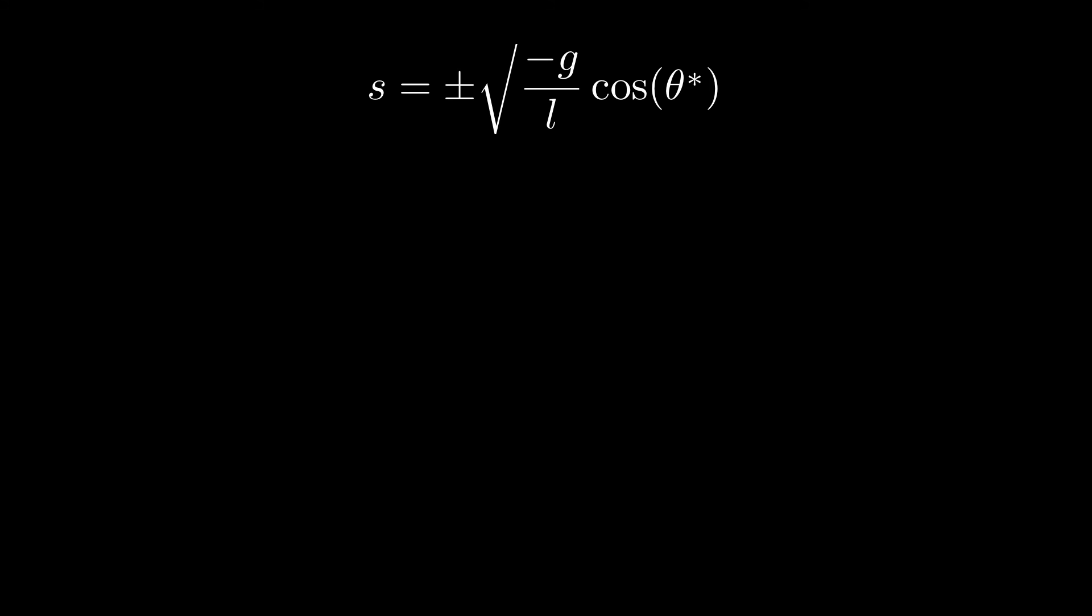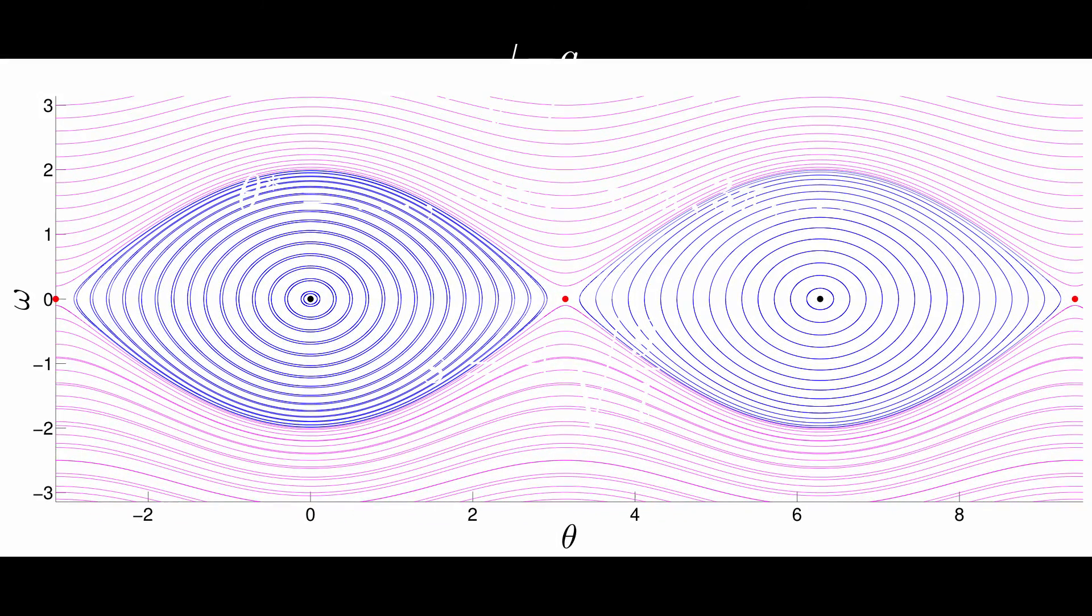If we instead choose theta to be an odd multiple of pi, for example pi, we see that cosine of pi is equal to minus one, and then we get the possible eigenvalues are plus or minus the square root of g divided by l. Since g and l are both positive, we have one positive eigenvalue and one negative eigenvalue.